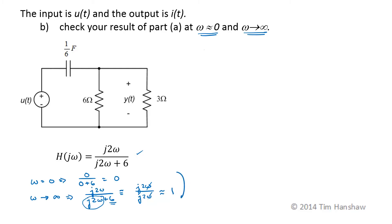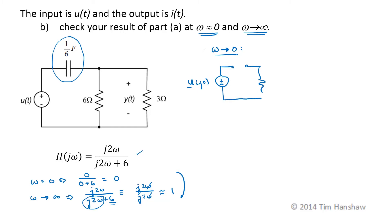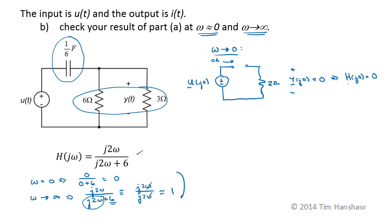Now we want to check these values against what we'd expect based on the physical behavior of the capacitor's impedance at very low and very high frequencies. From the circuit, as omega goes to 0, the capacitor looks like an open circuit. The 2-ohm resistance is still the 3 and 6-ohm resistance in parallel as before. Since there's no current through the open circuit, this has no voltage. So H of J0 is equal to 0, which agrees with our result from the frequency response.